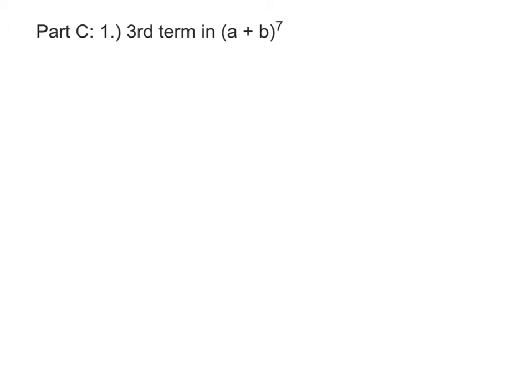Well, every term looks the same. We'll have the combinations of something, then a to a power, and b to a power. For the combinations, the first number is going to be equal to the power of the binomial, in this case, 7.